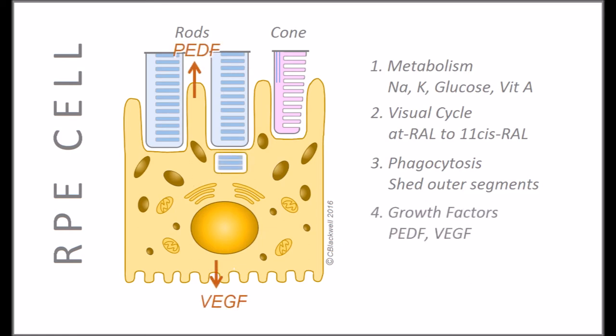Fourth, RPE cells secrete several important growth factors such as PEDF and VEGF. Fifth, the pigment in the RPE cells serves to absorb extra light so it doesn't bounce around inside the eye.